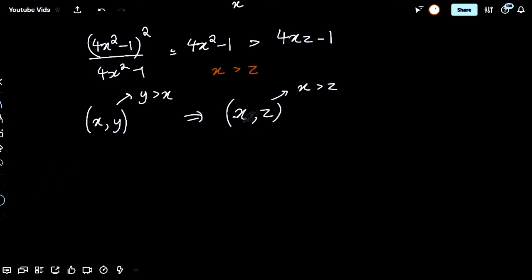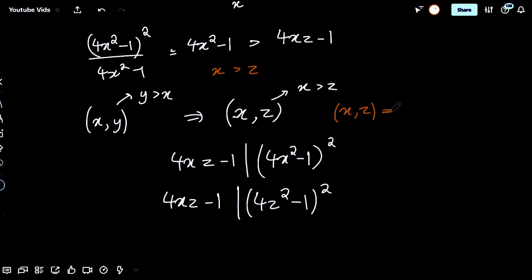If x were on the right, that would mean 4x, z minus 1 divides 4z squared minus 1 whole squared. So perhaps, if we were able to prove that if x, z is a good pair, then so is zx, then we'd be done. So, let's try to prove that.